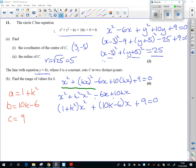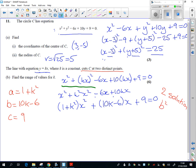And what we're saying, if it cuts at two distinct points, we're basically saying that this quadratic has two solutions. And for a quadratic to have two solutions, the discriminant must be greater than 0.